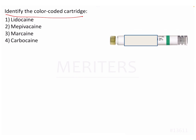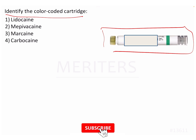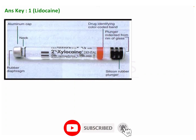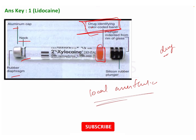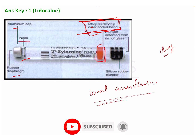The question asks us to identify the color-coded cartridge. This is a cartridge — here is a basic picture of the cartridge and its parts. The parts are not very important, but what we need to know is that there is a color-coded bar used to identify the drug. The drug here is nothing but the local anesthetic solution used in dentistry, making it easier for the dentist, doctor, or nurse to identify quickly.